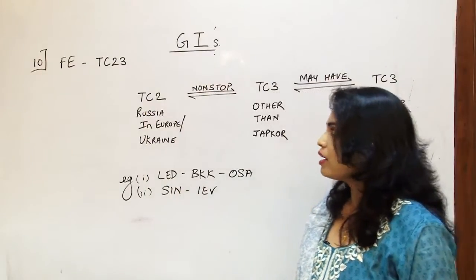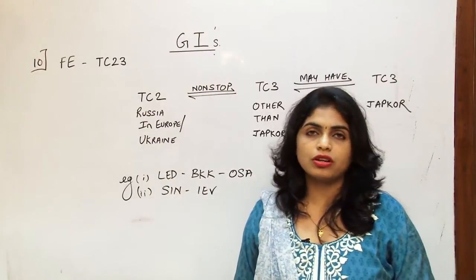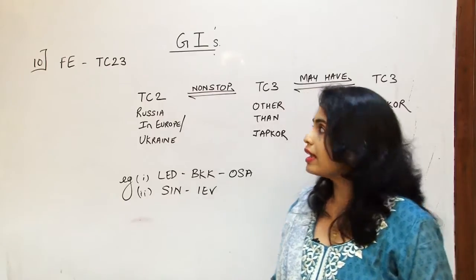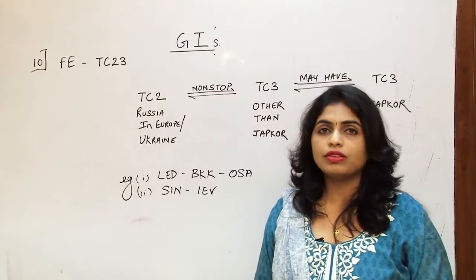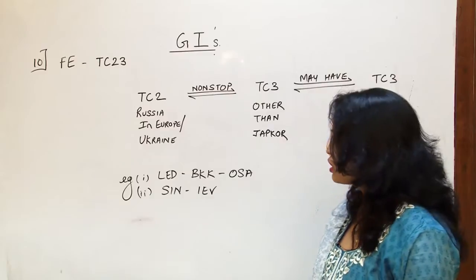Now the 10th GI that we have is FE which roughly stands for Far East. It again involves TC2 and TC3, that is Traffic Conference Area 2 and Traffic Conference Area 3.